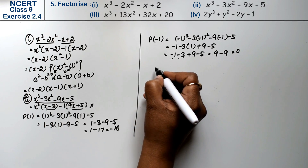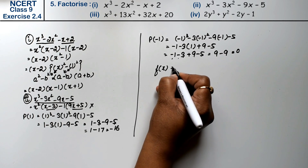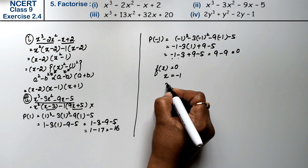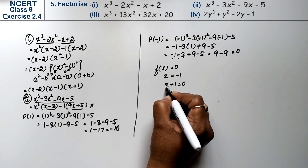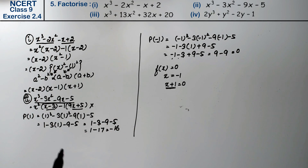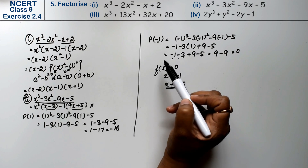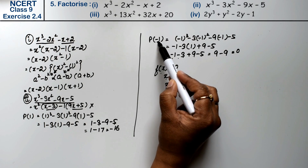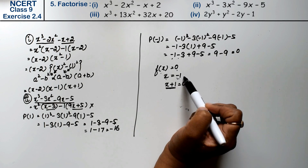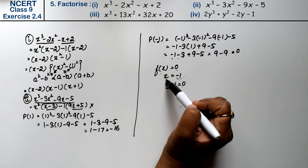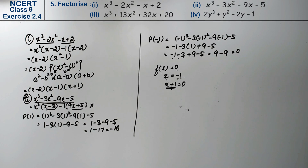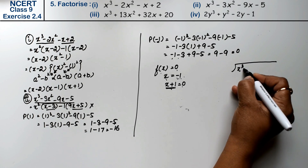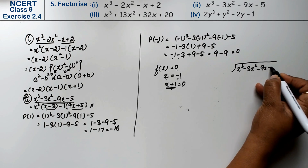Since f(minus 1) equals zero, x plus 1 is a factor of this equation. Now we divide x cubed minus 3x squared minus 9x minus 5 by x plus 1 to find the remaining quotient.